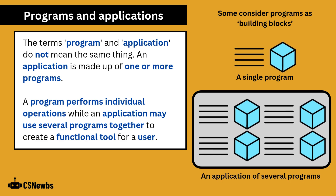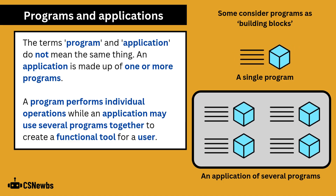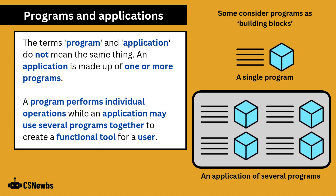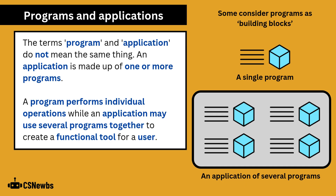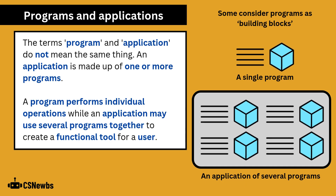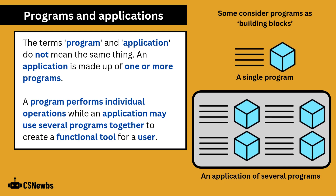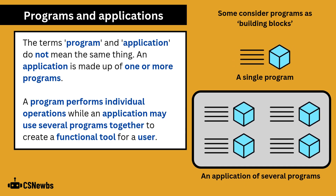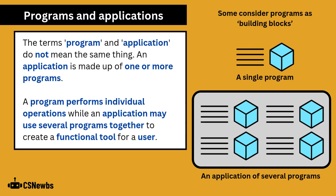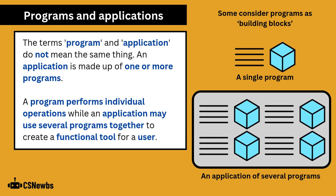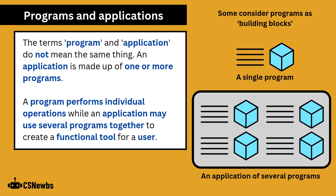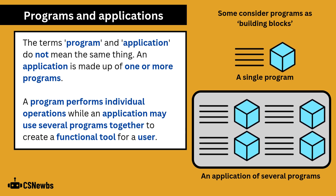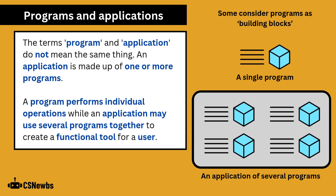The terms program and application do not mean the same thing. An application is made up of one or more programs. A program performs individual operations, while an application may use several programs together to create a functional tool for the user.